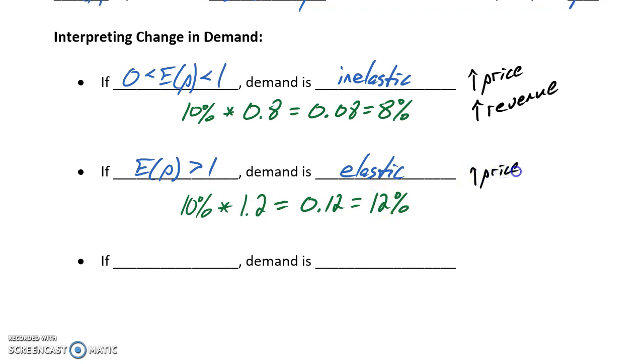In this case, increasing our price yields a decrease in revenue. Or we could flip that around to say that if we wanted to increase revenue, what we should do is actually decrease our price.